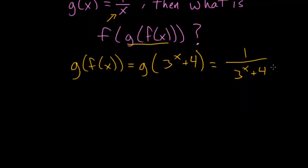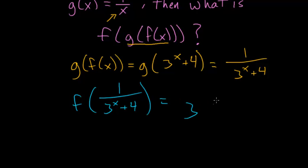And now we're going to take this g of f of x and plug it back into f. So f of this 1 over 3 to the x plus 4 is equal to 3 to the exponent of 1 divided by 3 to the x plus 4 and then plus 4 on the outside.